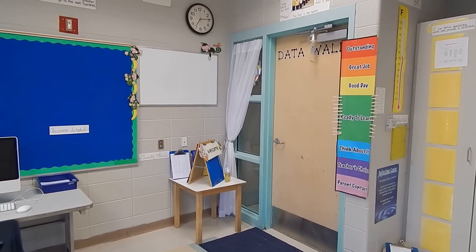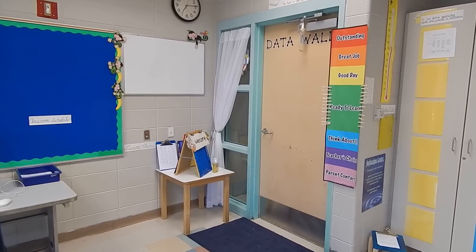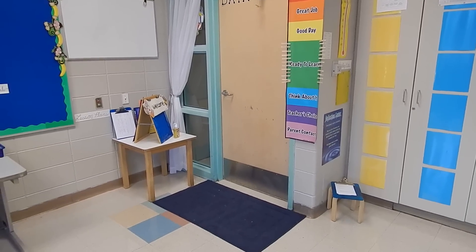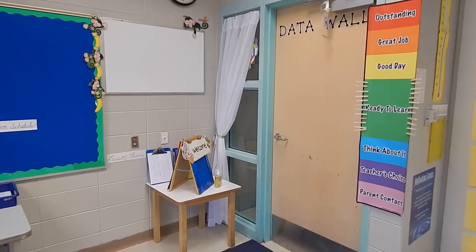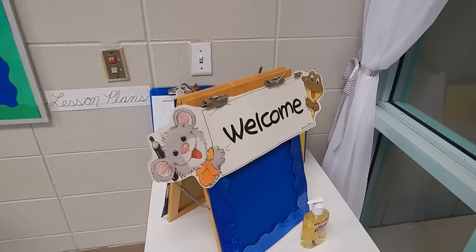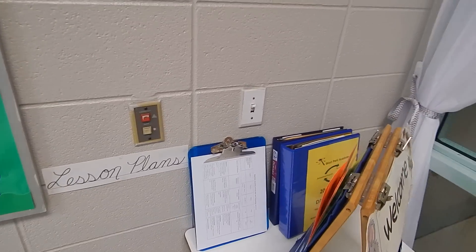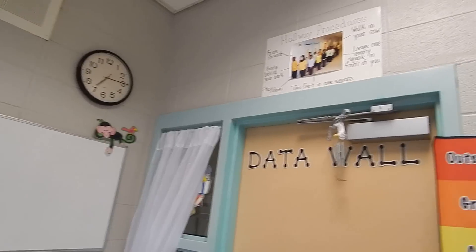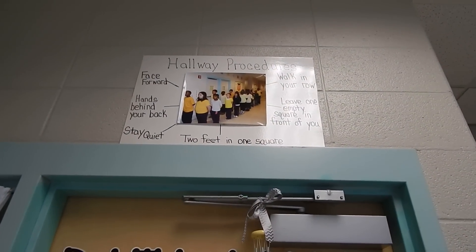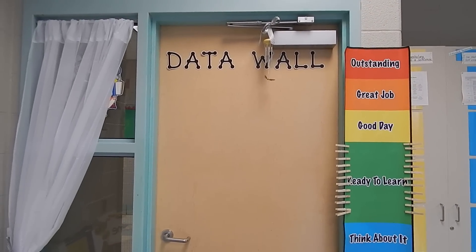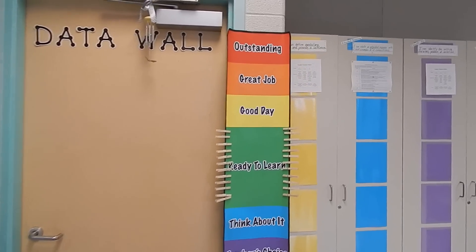Here is my classroom door, greeted by a carpet, curtains, and a welcome table that will have their pictures posted. Here are lesson plans, data binders required by administration, and the whiteboard where I will write down their homework. Above the door is a reminder poster of hallway procedures, and a data wall on the door to post important scores and information.